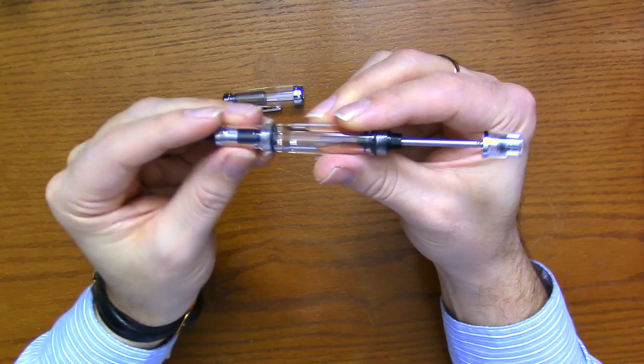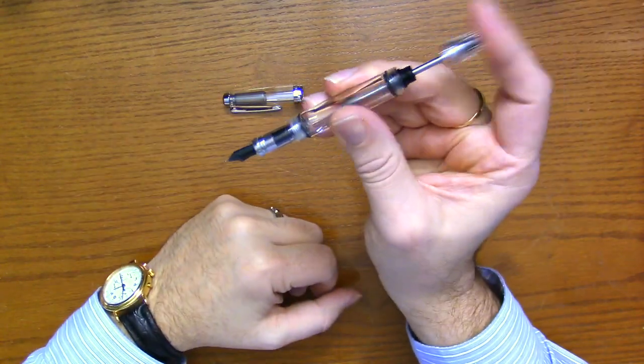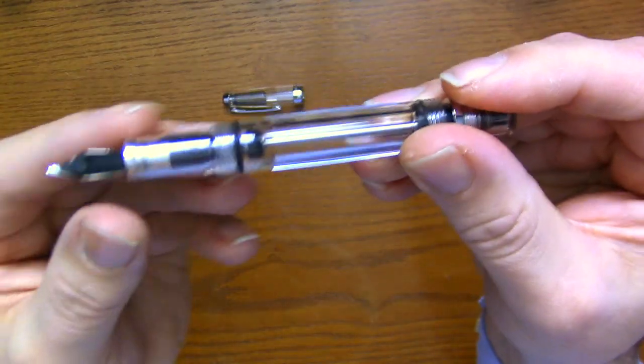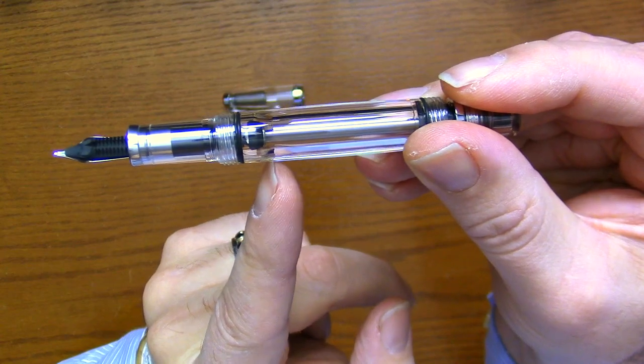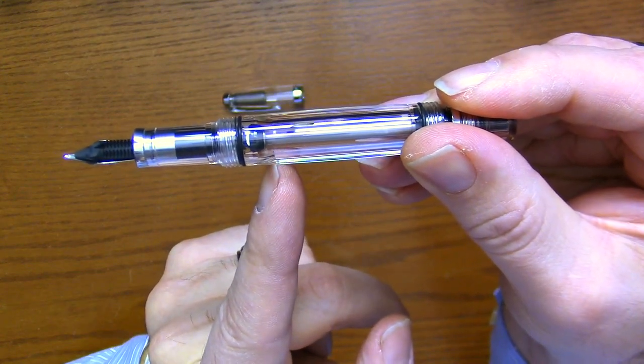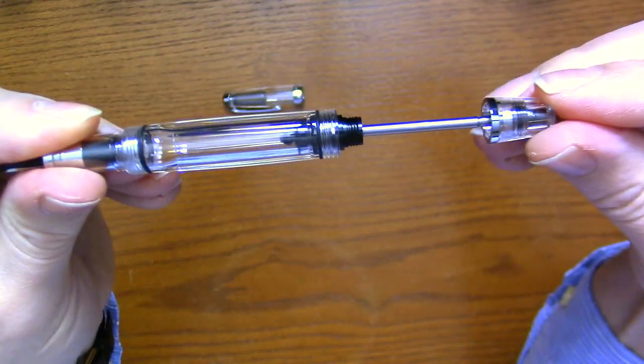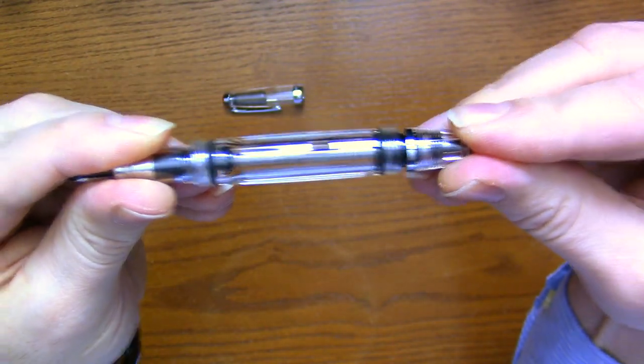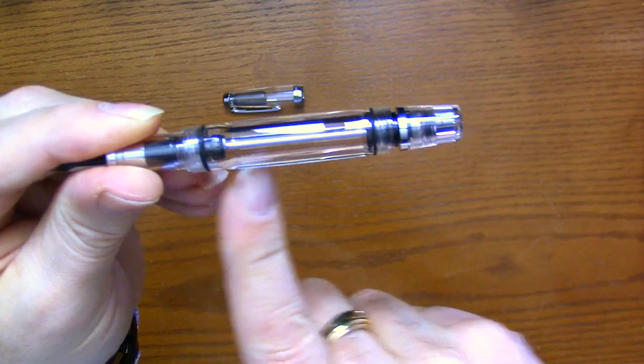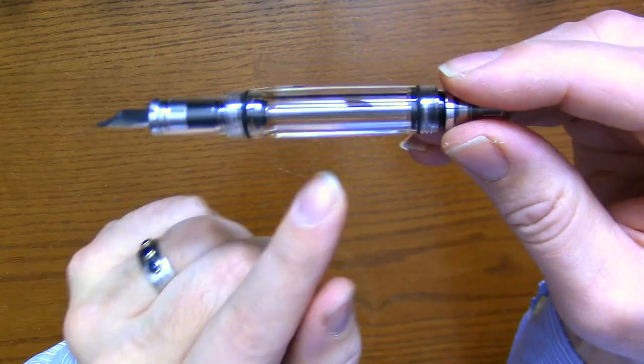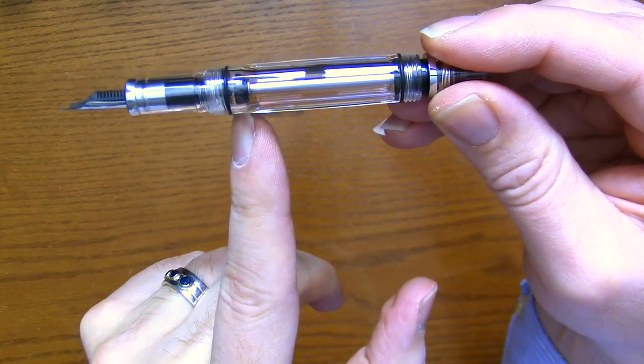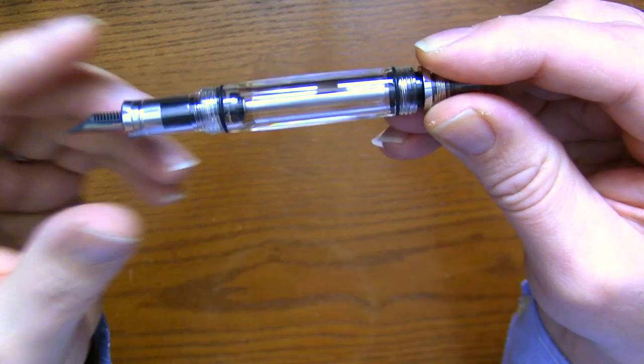This operates on the downstroke. You can see right here inside the barrel, the barrel gets thinner here. As the rod gets down, it opens up and forces the vacuum and ink will come in.